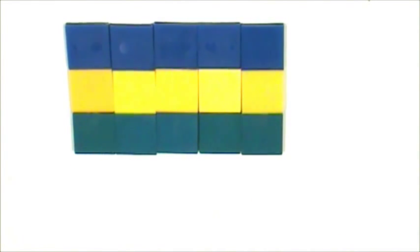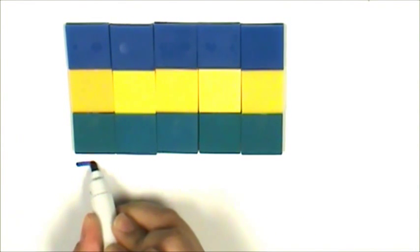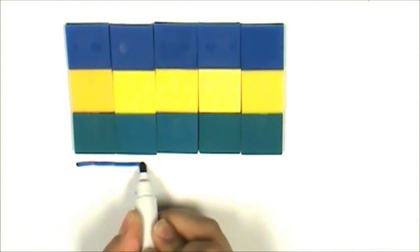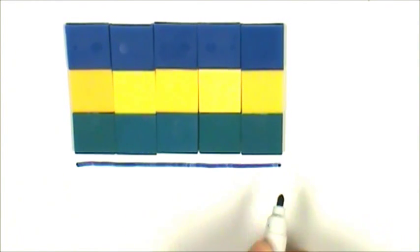First, I'm going to trace the length of the array in blue. The length of the first side is 1 inch, 2 inches, 3 inches, 4 inches, 5 inches long.